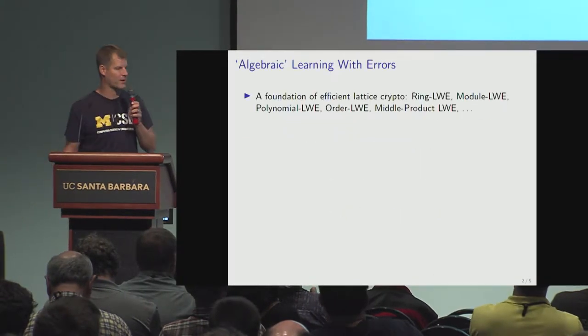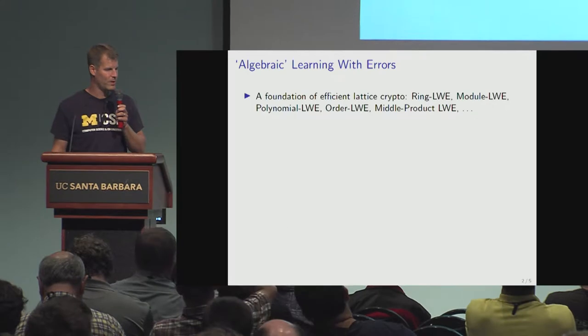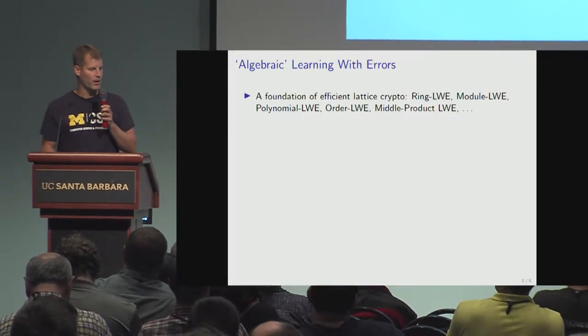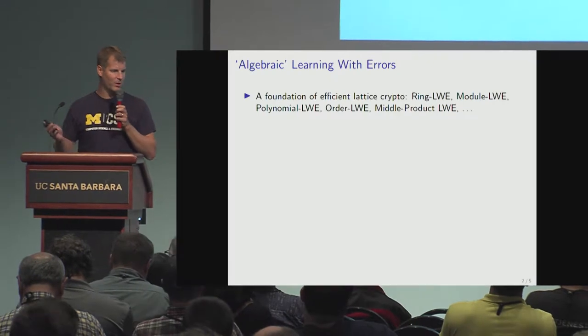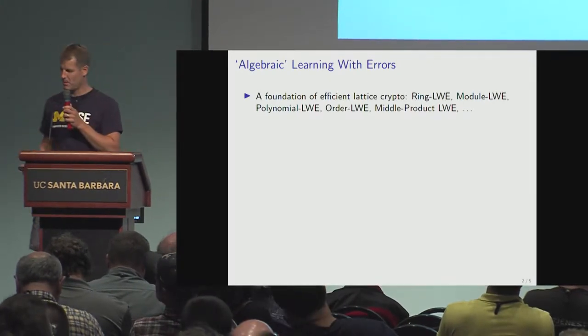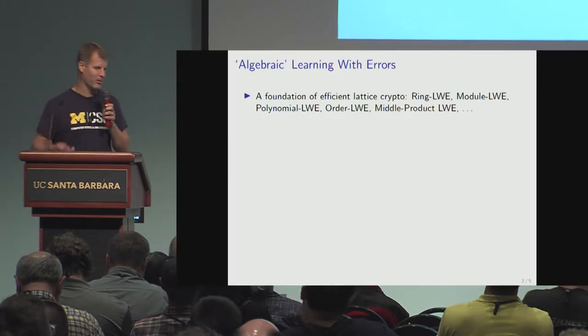The topic is algebraic versions of LWE. These are the foundation for lots of efficient lattice crypto and they go by various names: ring LWE, module LWE, polynomial LWE, order LWE, middle product LWE—maybe I missed some rump session talks, so there may be more by now.